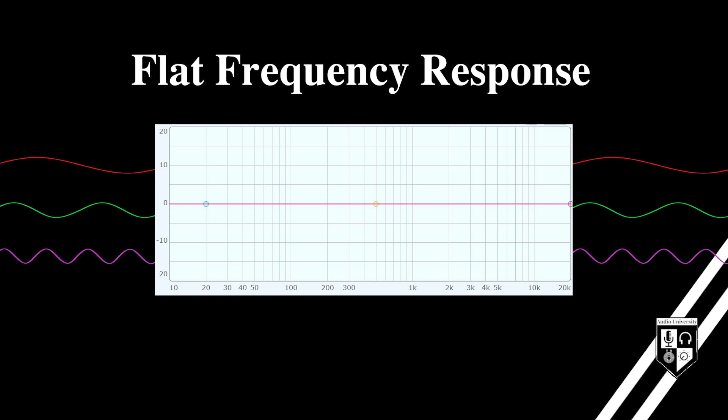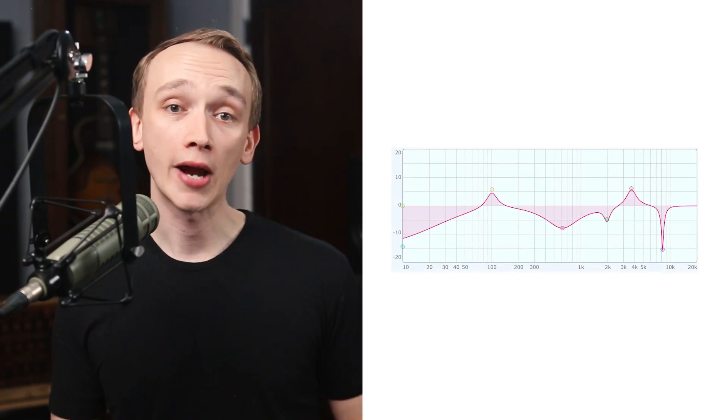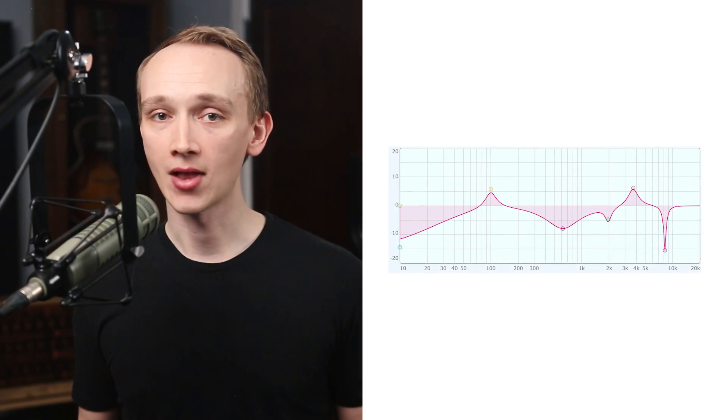If the device has no impact on the signal's frequency balance whatsoever, the frequency balance at the output of the device would also be perfectly balanced. That would mean the device has a perfectly flat frequency response, and would be represented on this graph with a perfectly flat line. On the other hand, if the device did alter the frequency balance of the signal, the frequency response graph for that device wouldn't be a flat line.